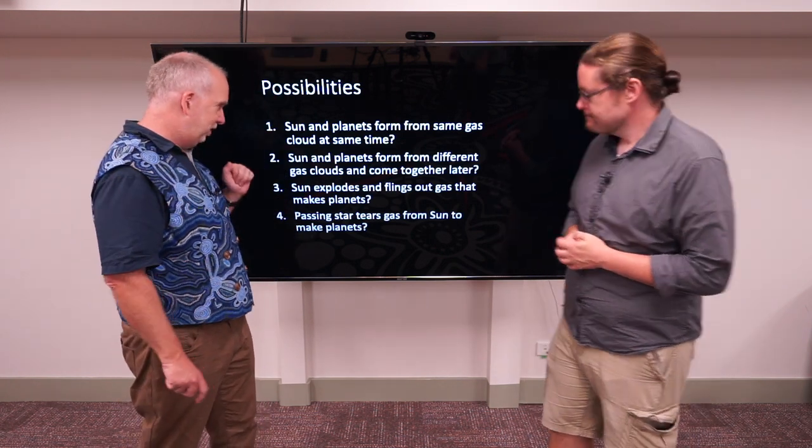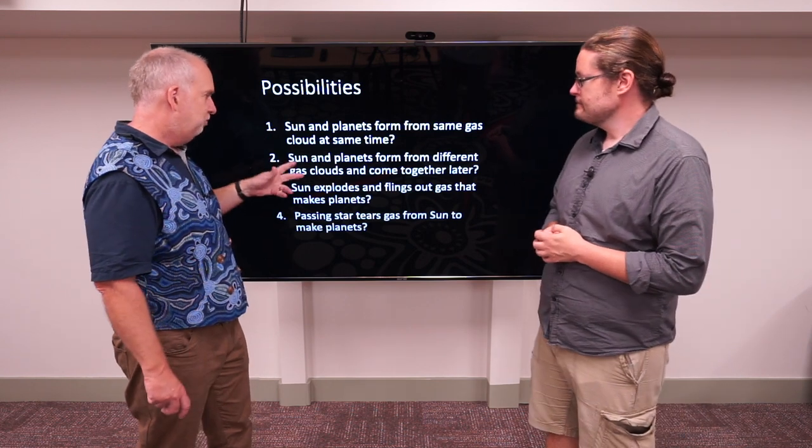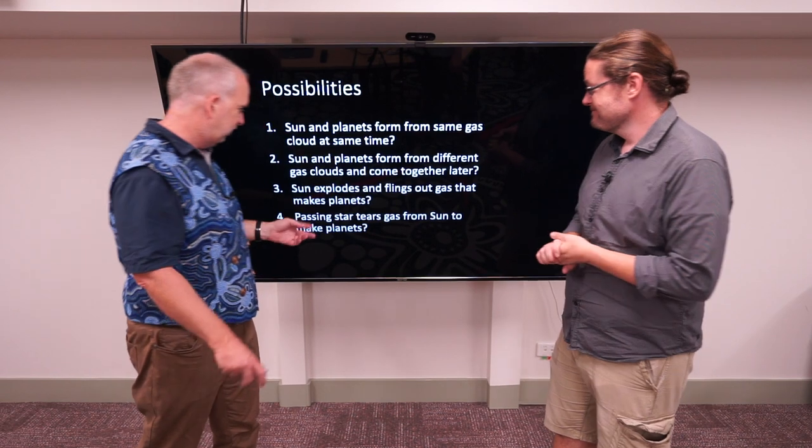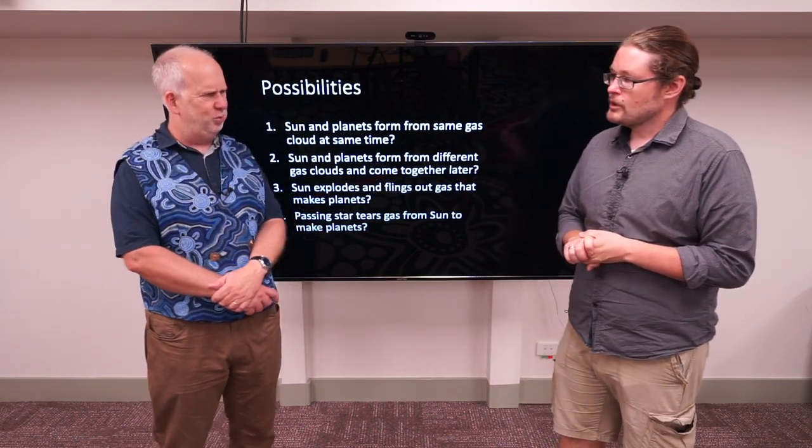Okay, so here are our four theories. We just talked about this: Sun and planets form from the same gas at the same time, for different gases that come together later, Sun blows the thing out, or there's a passing star that wrenches some stuff out of the Sun. So how are we going to tell which of these is true?